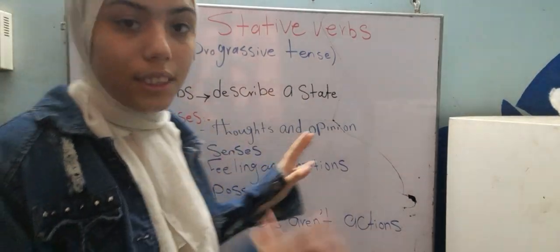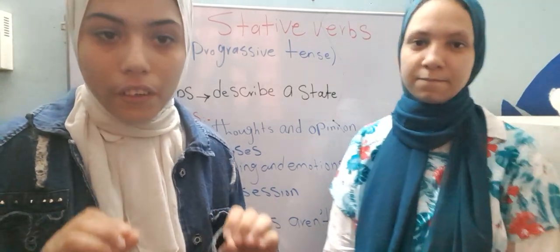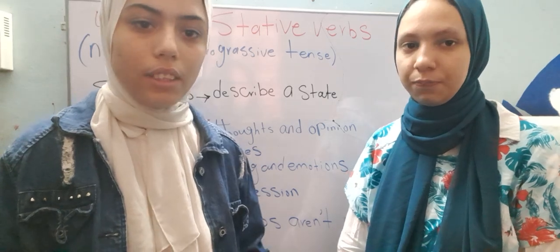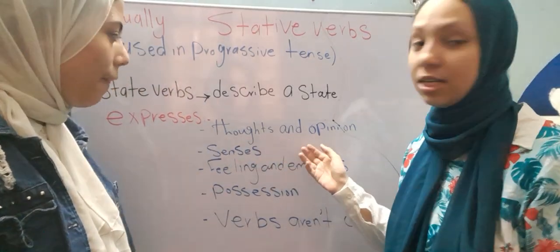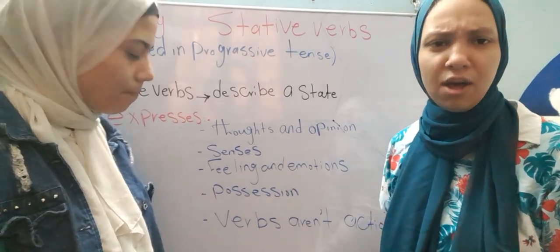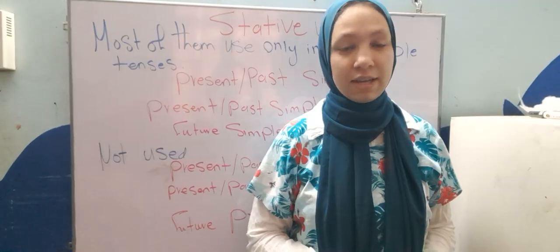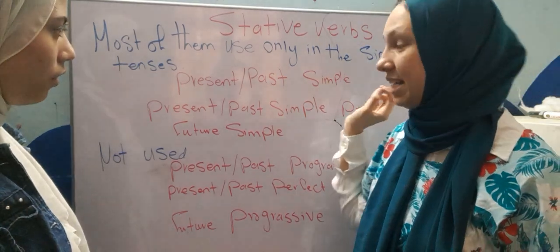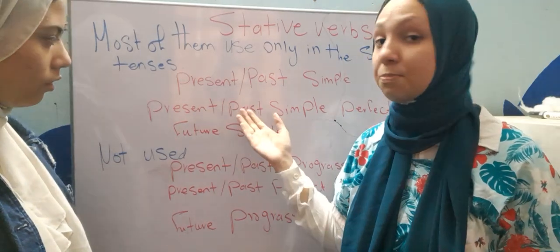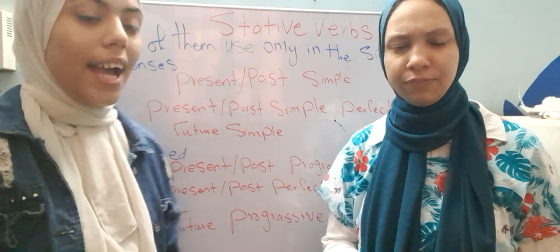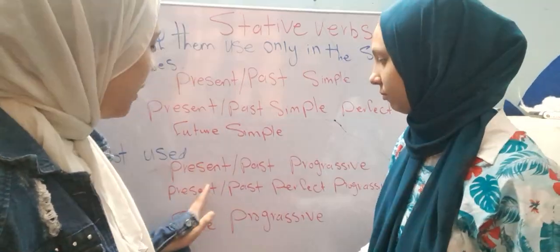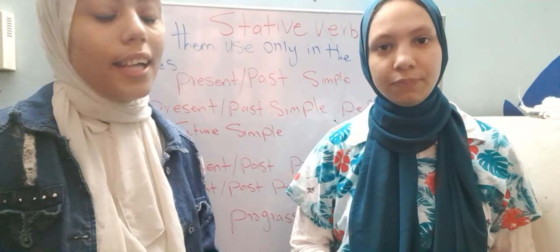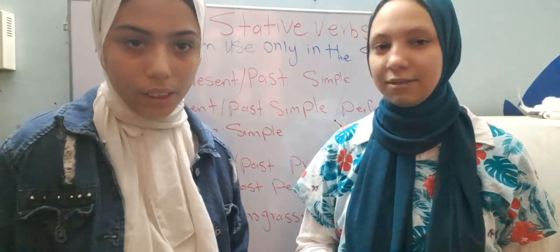The static verbs are also called state verbs. They describe a state rather than an action — they are the opposite of an action verb. They express thoughts and opinions, senses, feelings and emotions, positions, and verbs that aren't actions. Most static verbs are used only in simple tenses, like present and past simple, present and past perfect simple, and the future simple. They are not used with progressive tenses.